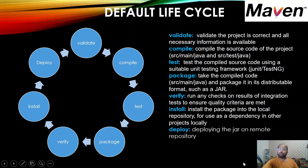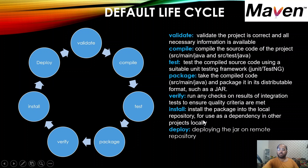Then we have the verify phase, which runs against the JAR to check the integration test cases status and whether quality criteria are met. Once the above phases are done, we can install this JAR into the local repository so that other projects can use it as a dependency on the current machine. Then we have deploy — we can deploy it onto some central location, central repository, or artifact repository by configuring the URL where we want to deploy it. This is the default lifecycle.